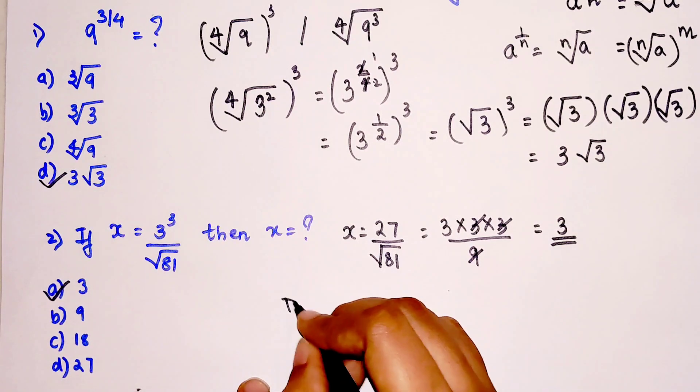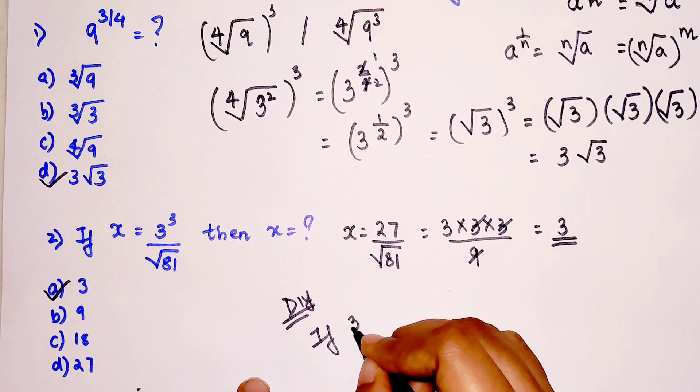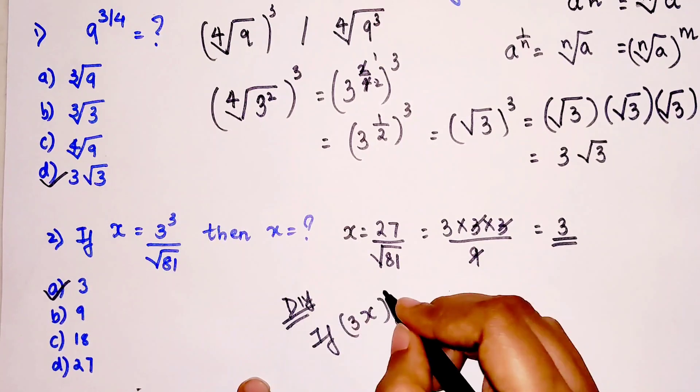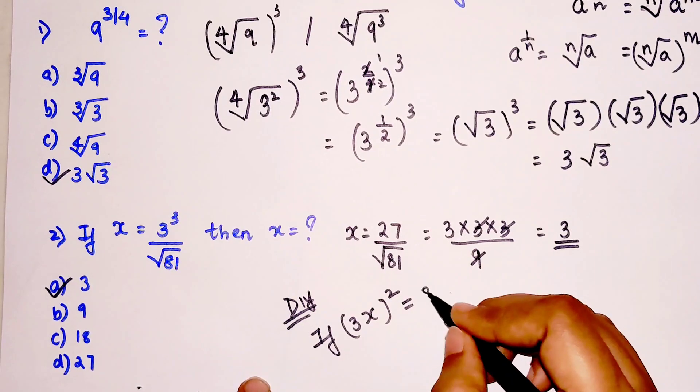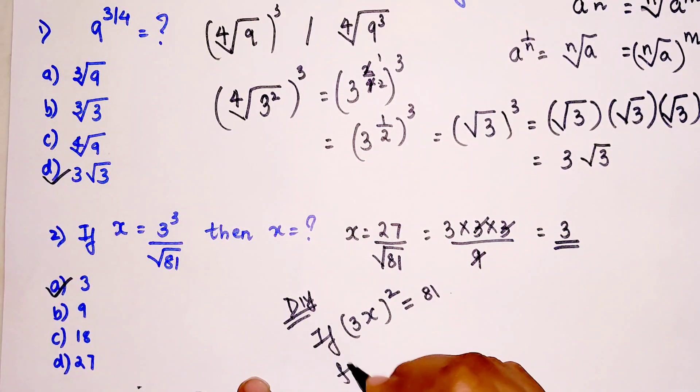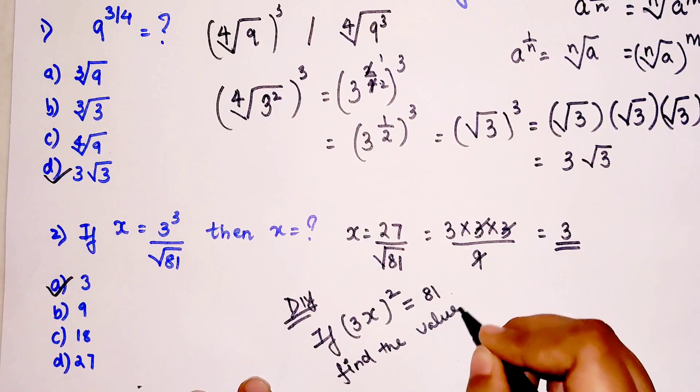So now let's look at another question - or basically this is your DIY. If (3x) squared is equal to 81, then find the value of x. Please do let me know your answers in the comment section.